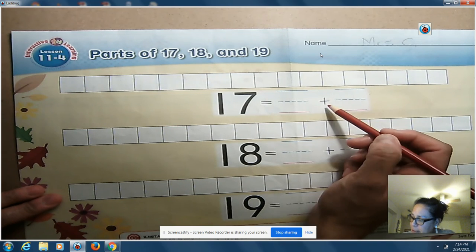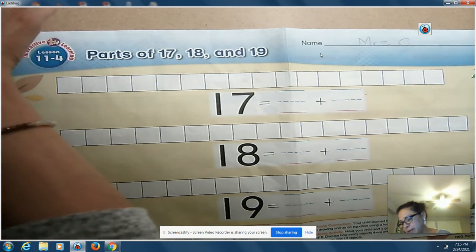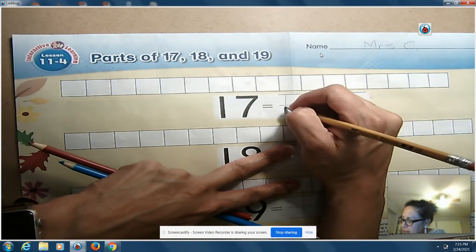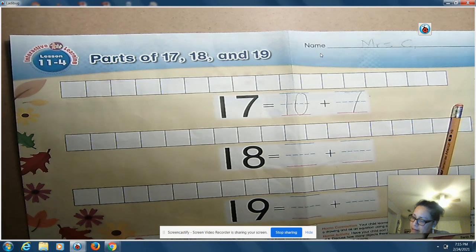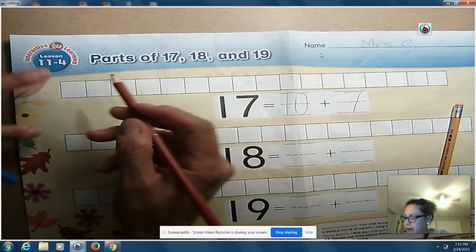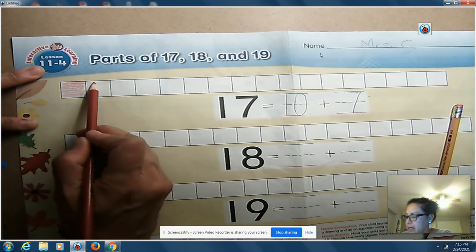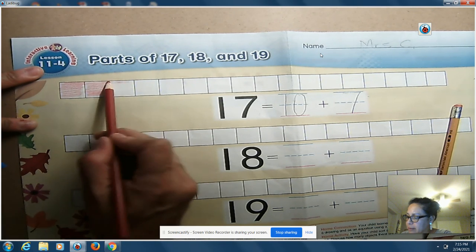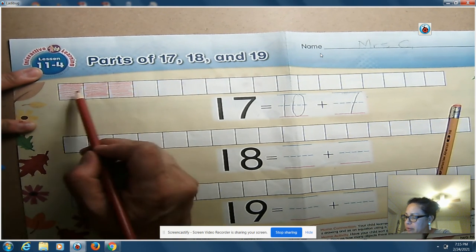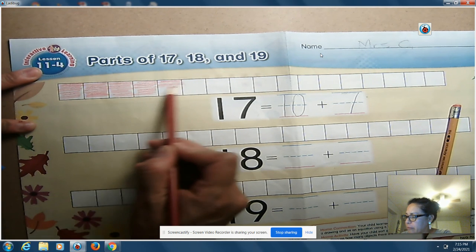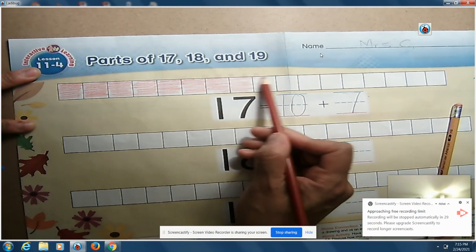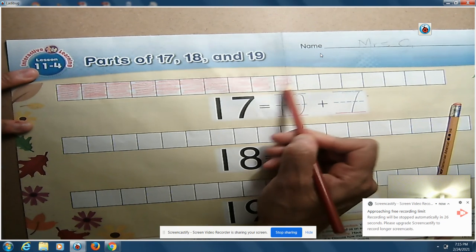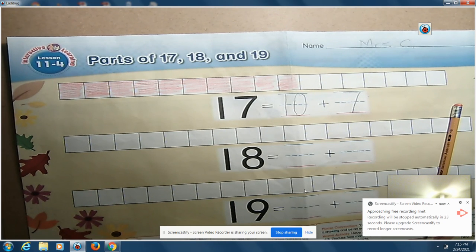10 plus what? Let's write that down. It's gonna be 10 plus 7, right? So make sure you write 10 plus 7. And then you're gonna take the red crayon and we're gonna make 10 of these cubes red. So make sure you count when you're coloring. 1, 2, 3, 4, 5, 6, 7, 8, 9, 10. All right, I'm gonna stop the video and I'll start a new one because it looks like I'm gonna run out of time, okay?